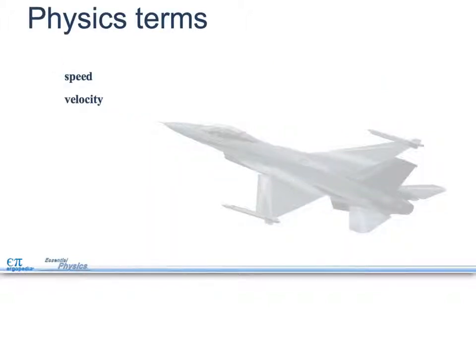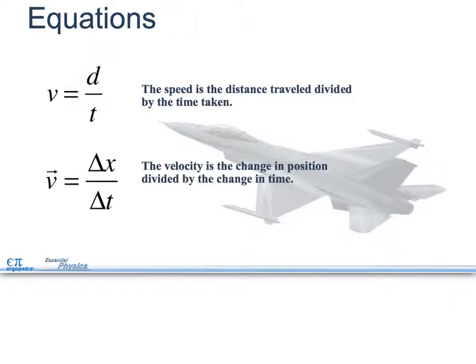Our only two terms in this are going to be speed and velocity, and we're going to talk a lot about both of these in this chapter. V equals d over t. The speed is the distance traveled divided by the time taken. Not to be confused with what's on the bottom down here. They basically say the same thing, but the arrow and the triangles mean something different.